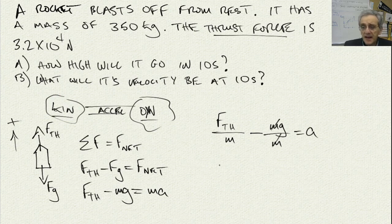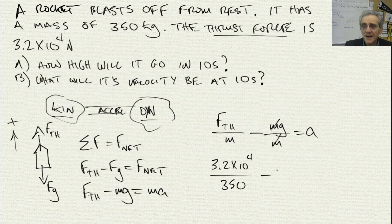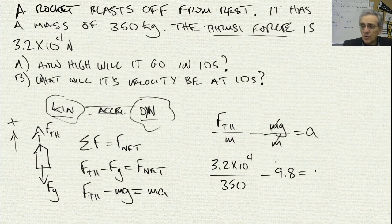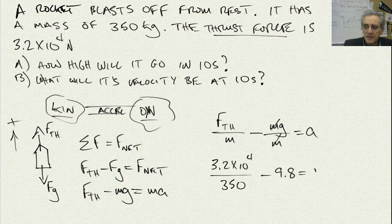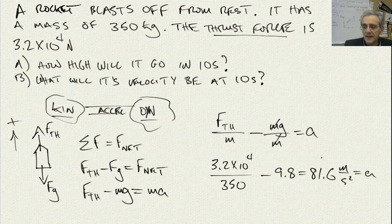And I can now plug my values in that I know. So my thrust force is 3.2 times 10 to the power of 4 divided by 350 kilograms minus 9.8. And when I do this, I get a value of 81.6 meters per second squared. That's my acceleration.